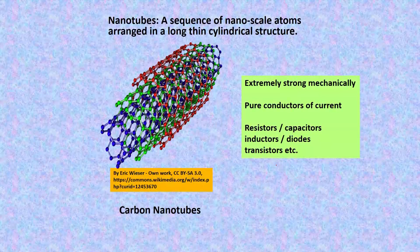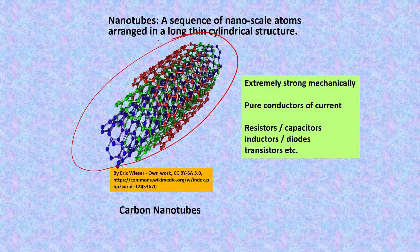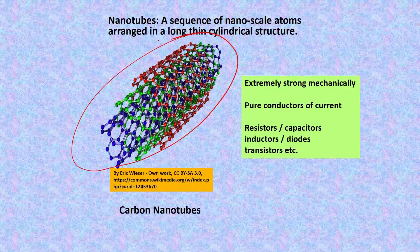We get nanotubes, which are a sequence of nanoscale atoms arranged in a long thin cylindrical structure. They are extremely strong mechanically, they are pure conductors of current, and they are very much used in resistors, capacitors, inductors, diodes, transistors, etcetera.